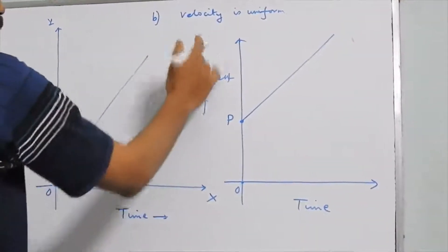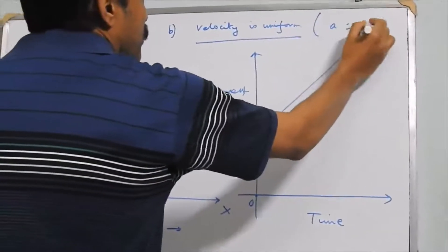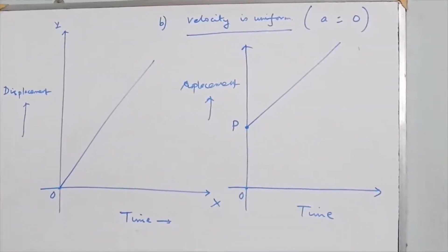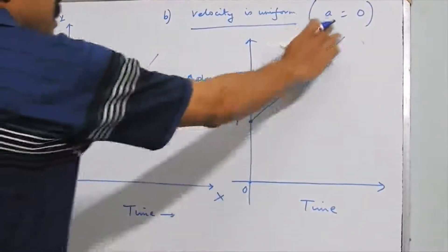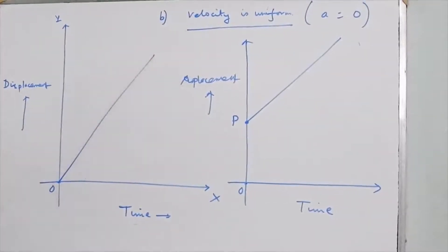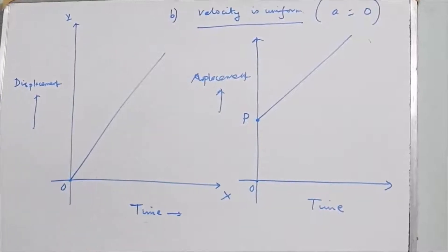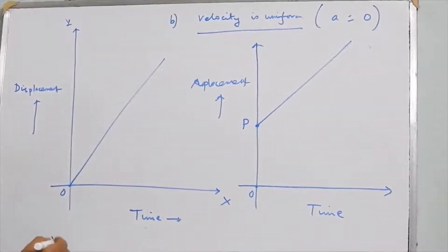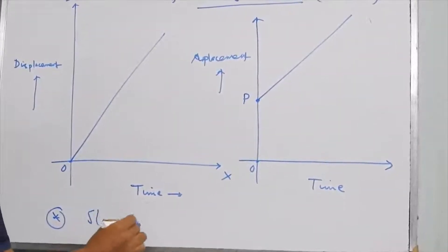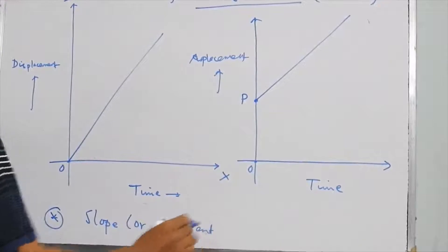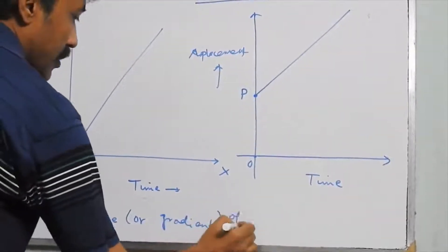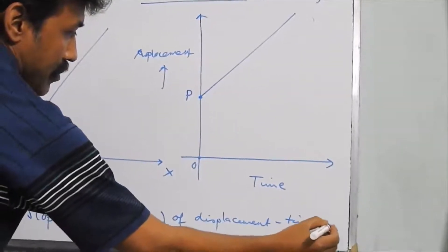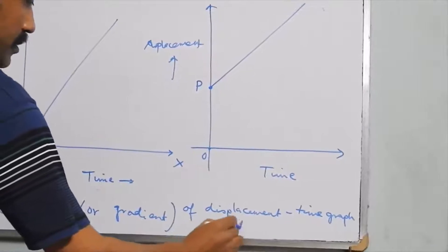In both cases, the straight line inclined to the time axis represents that the velocity is uniform, which also means the acceleration is zero — equal displacements occur in equal time intervals, so the velocity is constant and acceleration is zero. From the displacement-time graph, we can calculate the velocity: the slope or gradient of the displacement-time graph gives the velocity.